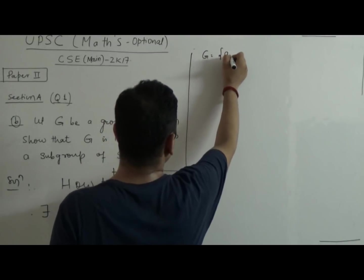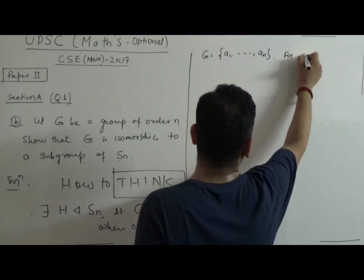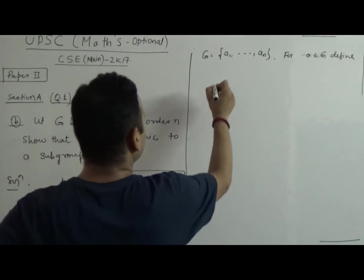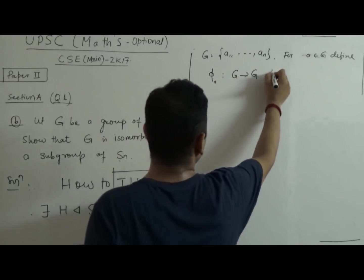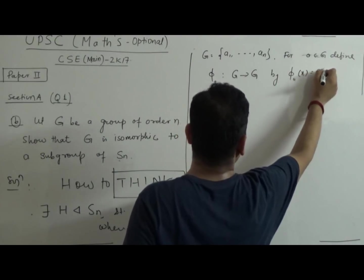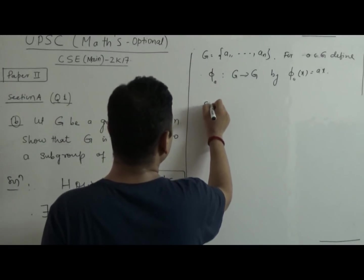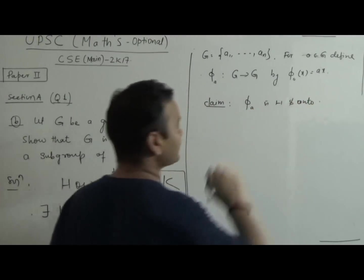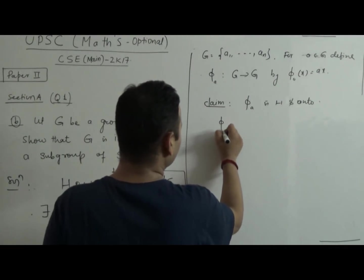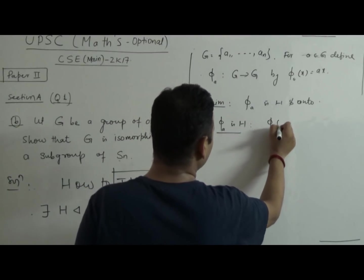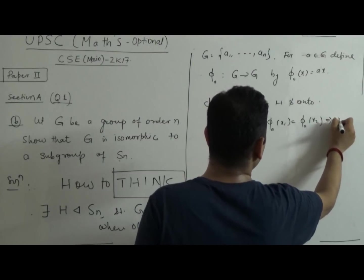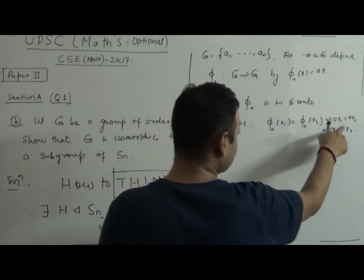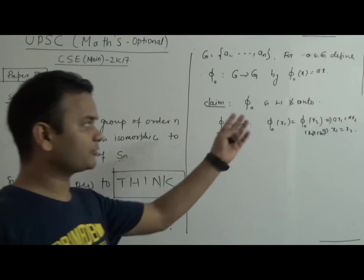So let G be this group. For each element a belonging to G, define the map φ_a: G → G by φ_a(x) = ax. Now claim: φ_a is one-one and onto. To prove φ_a is one-one: if φ_a(x₁) = φ_a(x₂), that implies ax₁ = ax₂, which implies x₁ = x₂ by the left cancellation law. So φ_a is one-one.